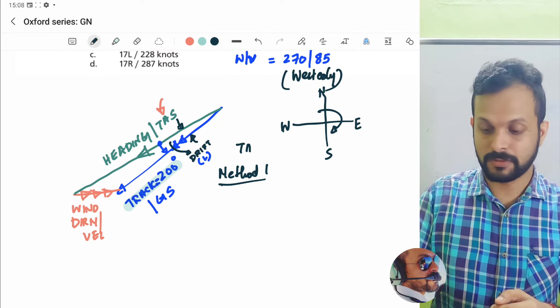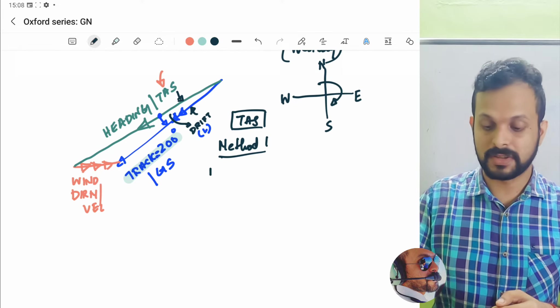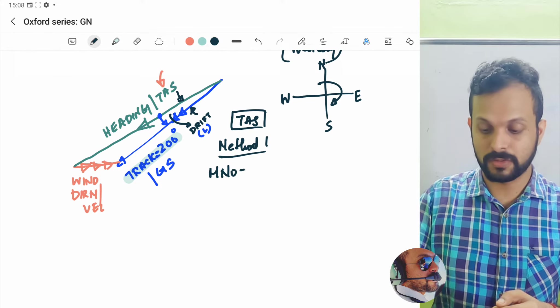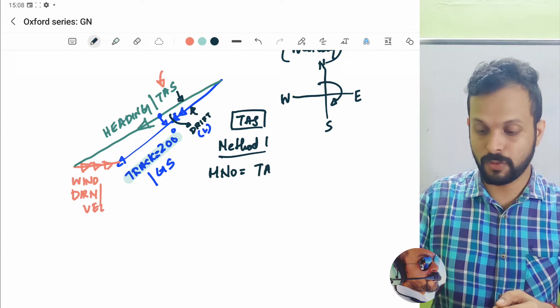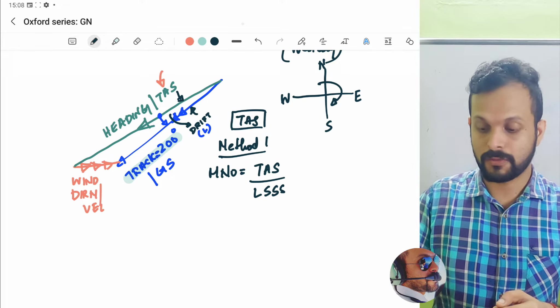Now, remember this method is to find out the TAS. The first method is using the Mach number equation, and we know that Mach number is the ratio of true air speed divided by local speed of sound.